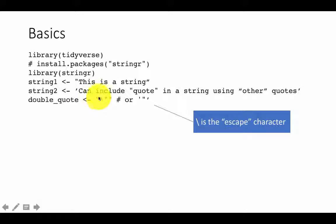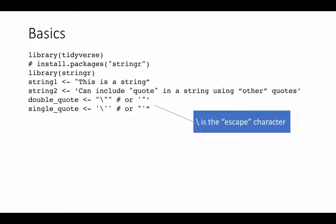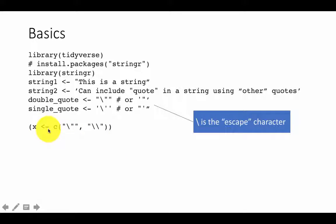These are called escape characters. A particular character has a certain meaning when normally used; if you want to change that meaning and use the character literally, you put a backslash to escape it. So backslash double-quote gives you a literal double quote inside a string. Here we create a vector x — one element is a single quote character, and another is just the backslash character itself. Since backslash is the escape character, you write double-backslash to represent a single literal backslash.